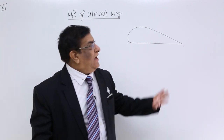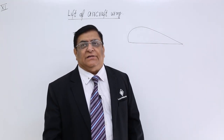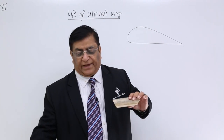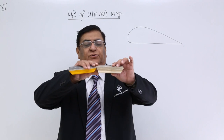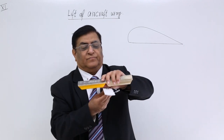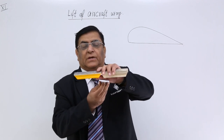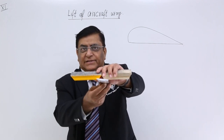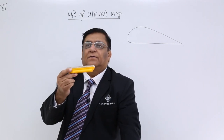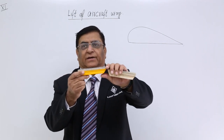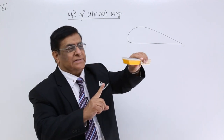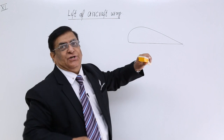I have made a diagram here. This diagram is the front view of the two wings. These are the two wings and here is the body of the plane. Now observe this wing from the side — that is this picture.